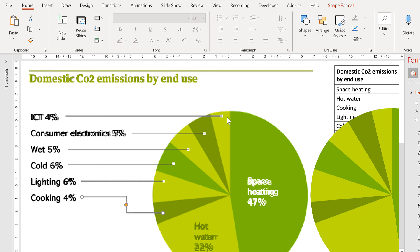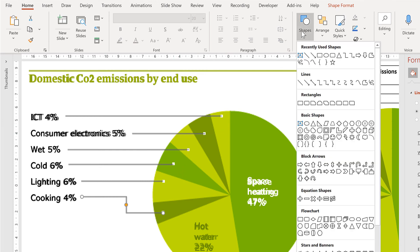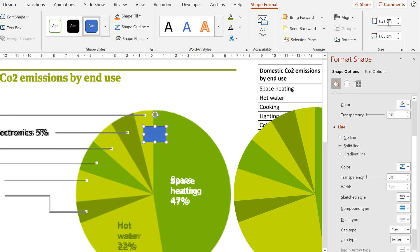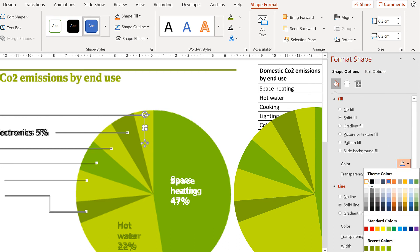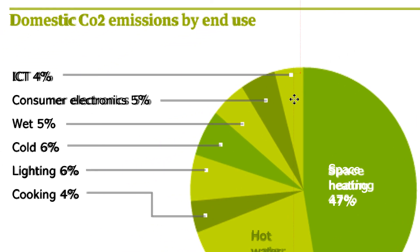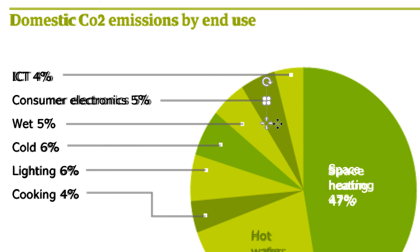The next step is to create the white squares. Go to Shapes and select the Rectangle tool, then click and drag to draw a rectangle. Change the height to 0.2cm and the width to 0.2cm, then change the fill colour to white and remove the outline — this creates a white square. Use the guidelines to line it up with the grey line, then hold down Ctrl and click and drag to make copies, lining each one up with the grey lines underneath.